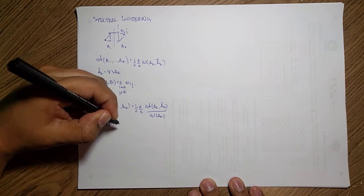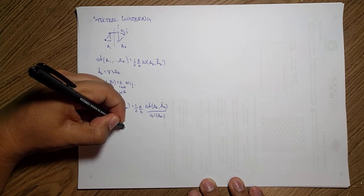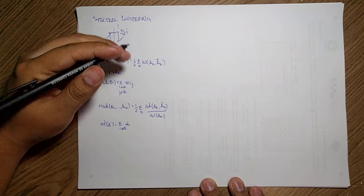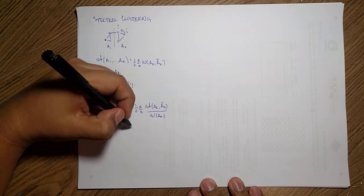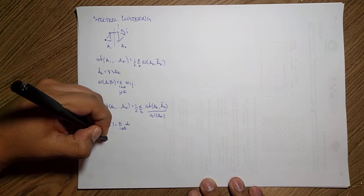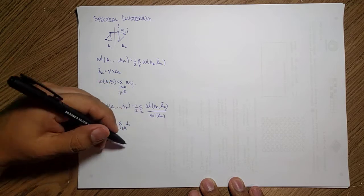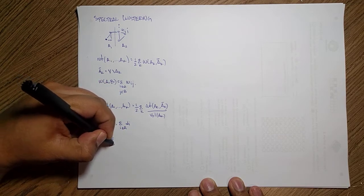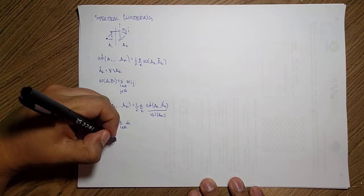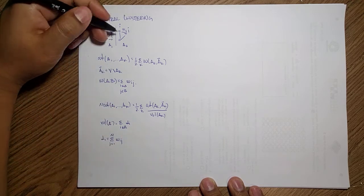This volume of A is just the sum of all the i's in A, just summing the degrees. These degrees are defined as the degree di as the sum of all the j's from 1 to n, so I'm just going to traverse all the different nodes and sum all the weights wij.